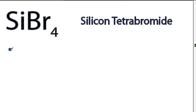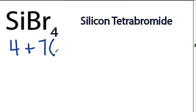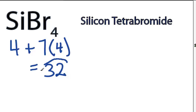This is the Lewis structure for SiBr₄, silicon tetrabromide. Silicon is in group 4, sometimes called 14. It has 4 valence electrons. Bromine has 7. We'll multiply that by 4, though, for a total of 32 valence electrons for SiBr₄.